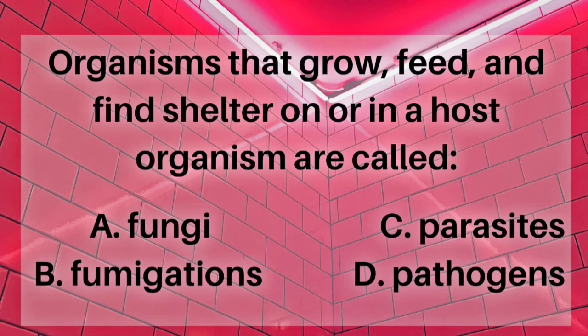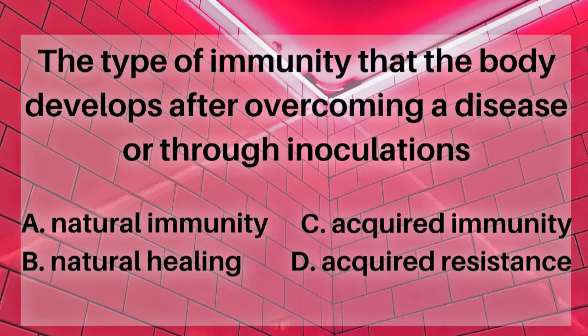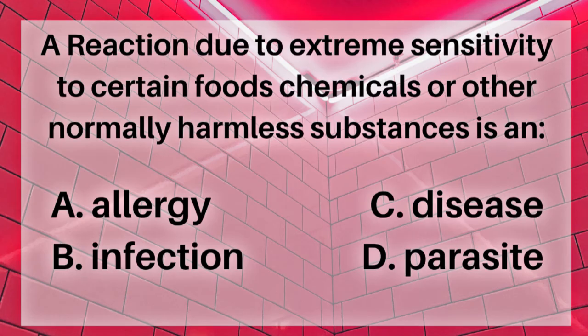The type of immunity that the body develops after overcoming a disease or through inoculations is: A. Natural immunity, B. Natural healing, C. Acquired immunity, or D. Acquired resistance. The answer is C. Acquired immunity.